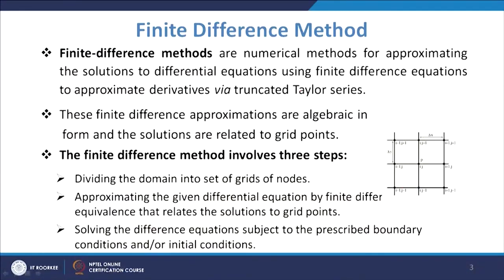These finite difference approximations are algebraic in form and the solutions are related to grid points. For example, if you want to find the derivative at a given point, it may be the value at that point minus the value at a neighboring point divided by the distance. Similarly, in a domain, the derivative in a given direction uses values at two points separated by a distance delta y.